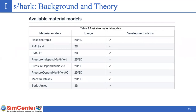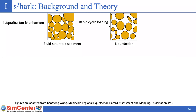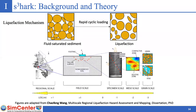SHARC has eight soil models that can be used, including elastic and plastic models. A notable feature is liquefaction analysis. Liquefaction is the phenomenon in which pore water pressure increases and effective stress reduces to zero, causing the soil to lose its stiffness and strength and behave like a liquid — typically in response to sudden stress changes such as earthquake loading. The liquefaction problem is challenging due to high plasticity, nonlinearity, and uncertainty across different scales. SHARC is capable of capturing the liquefaction phenomenon during shaking.